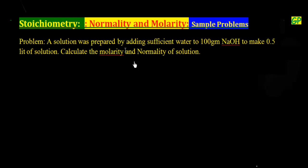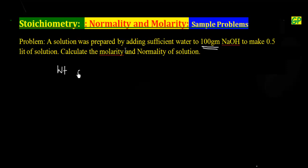This problem is related to finding normality. The question says a solution was prepared by adding sufficient water to 100 grams of NaOH to make 0.5 liters of solution. We have to calculate molarity and normality. The weight of the solute, NaOH, is given as 100 grams.